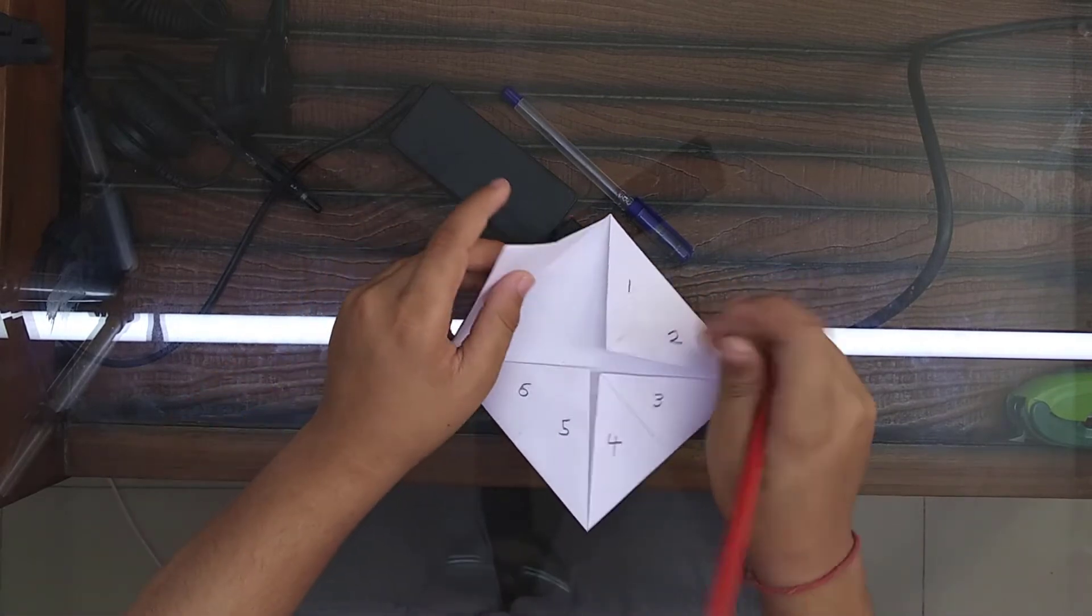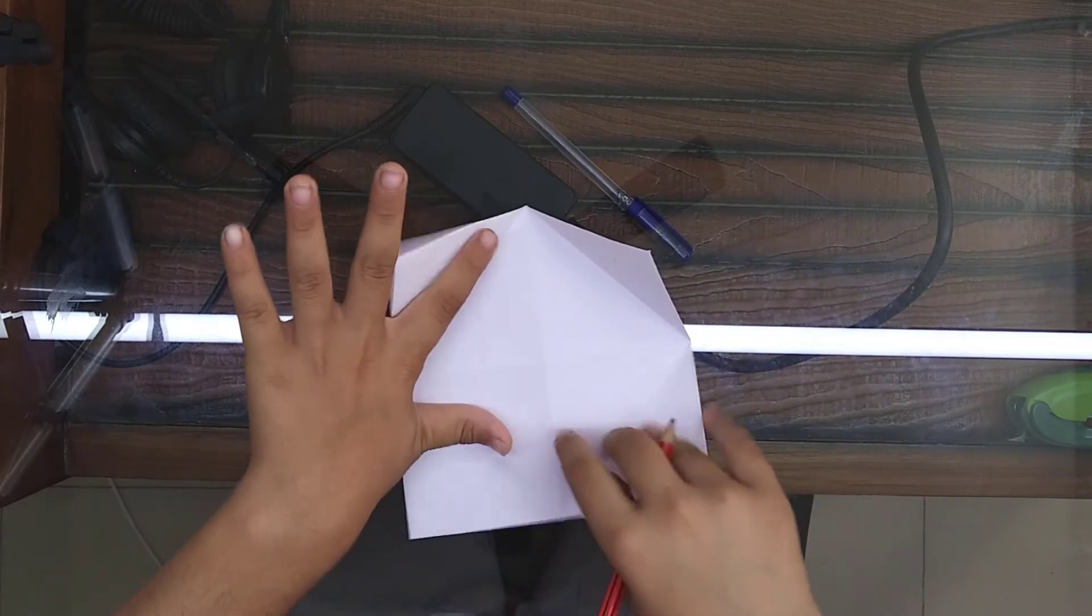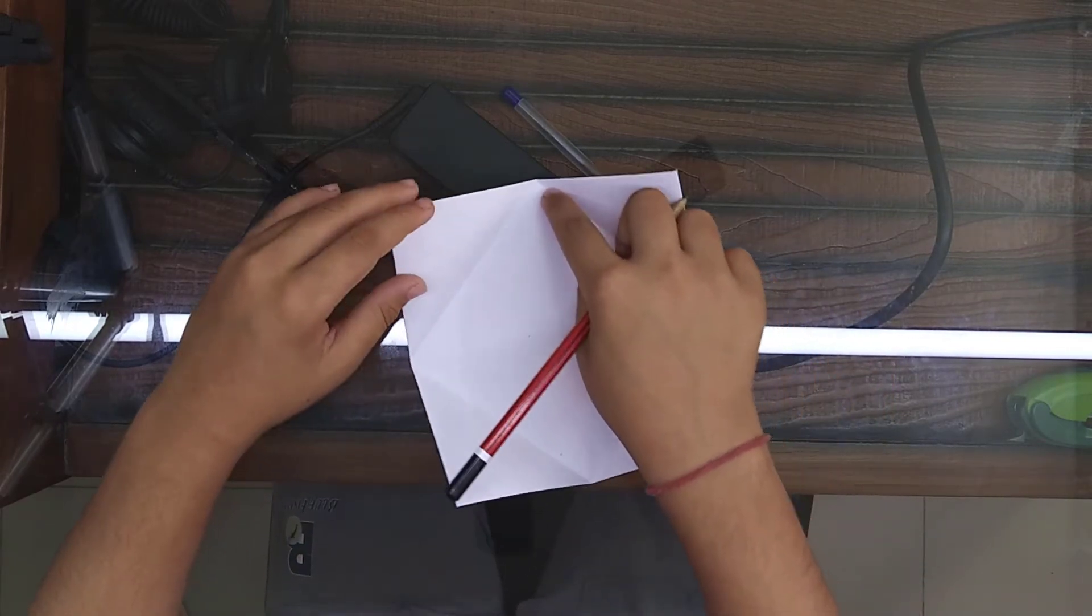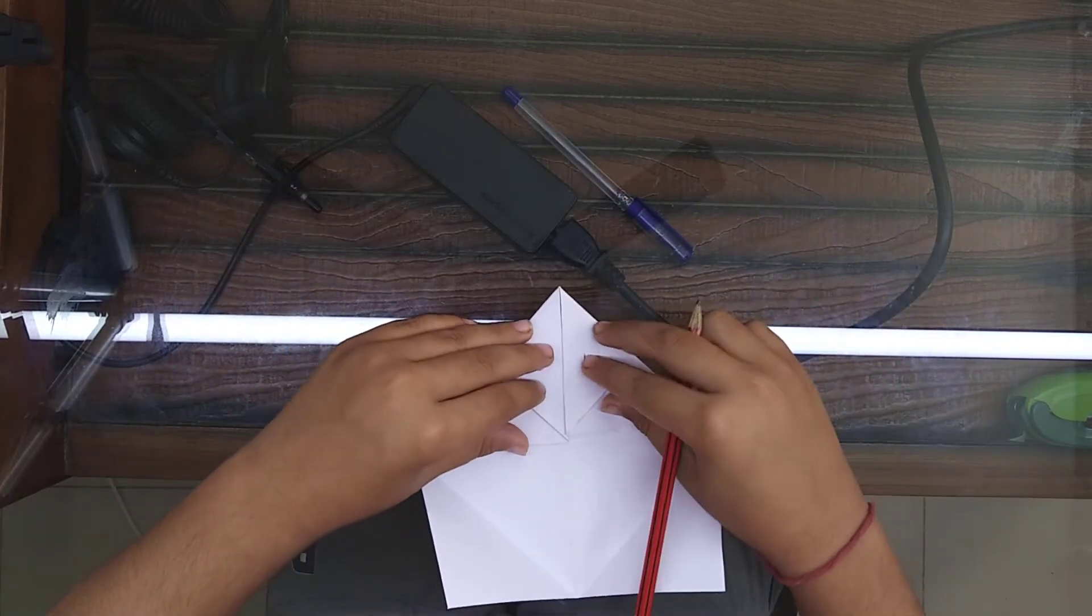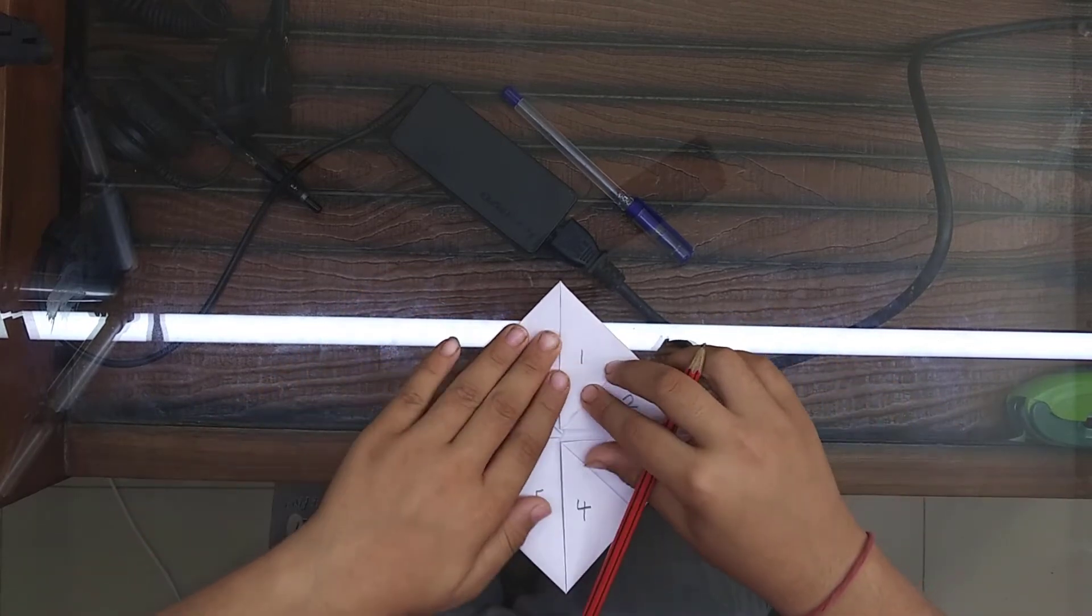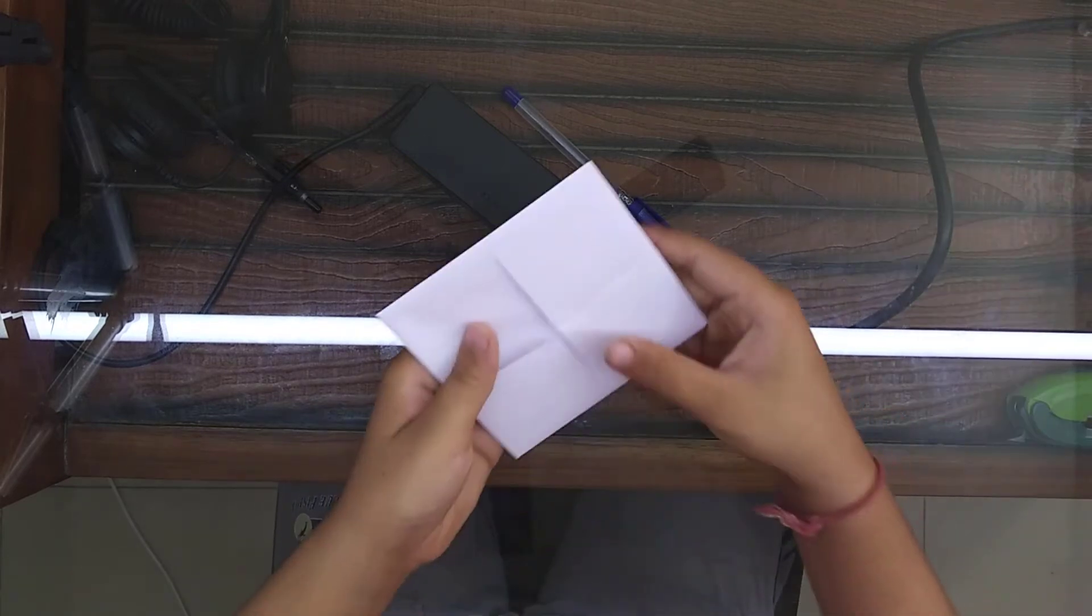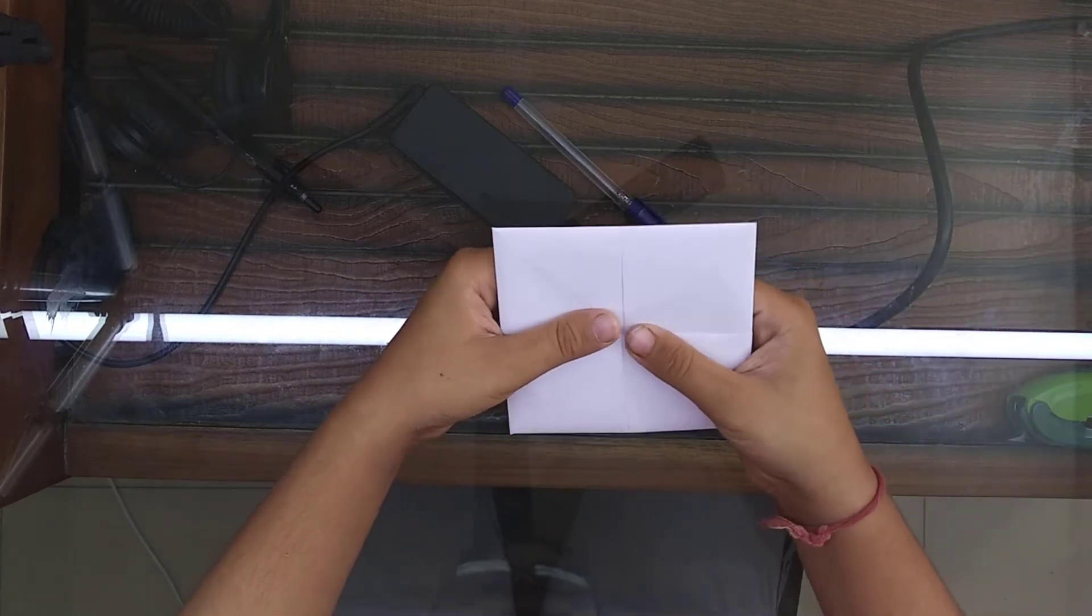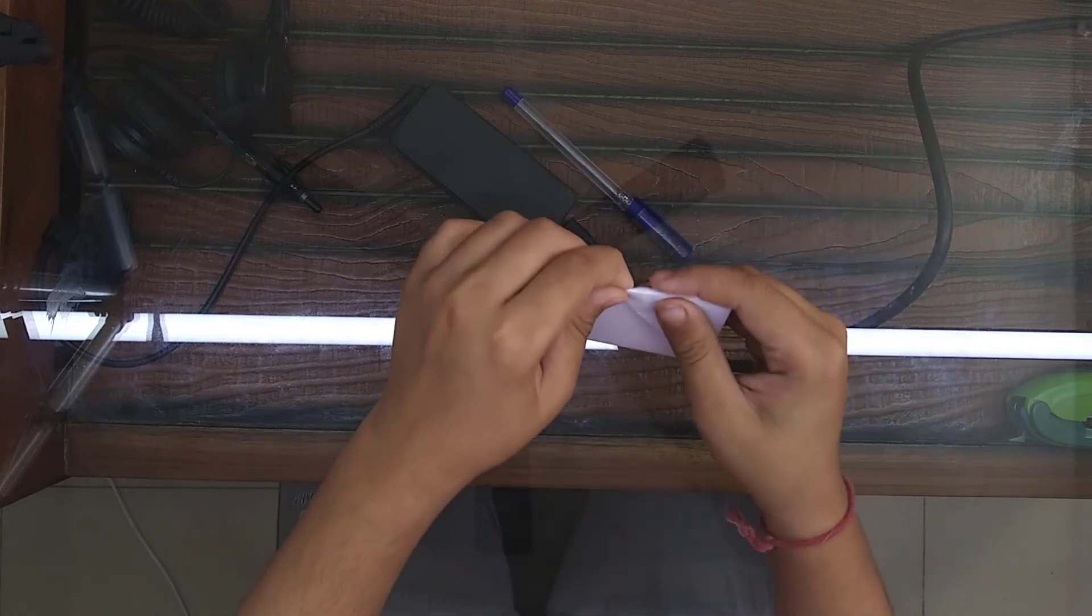And between these columns you can write anything in here, in like this whole square you can write anything whatever you want. Now keep the pencil away. Now we don't need it. Now flip the paper. Now press it like this.